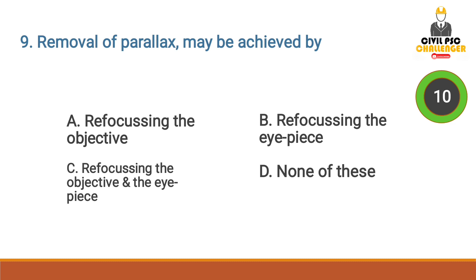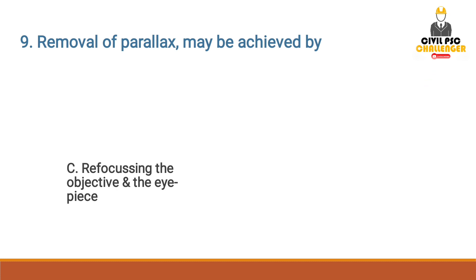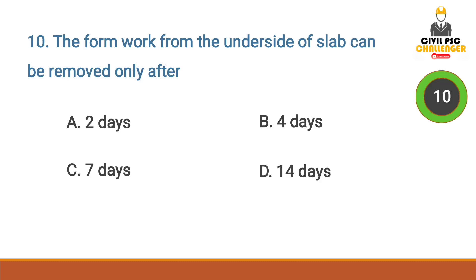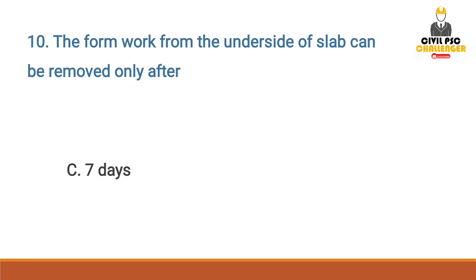Removal of parallax may be achieved by — Answer option C: Refocusing the objective and the eyepiece. The formwork from the underside of a slab can be removed only after — Answer option C: Seven days.